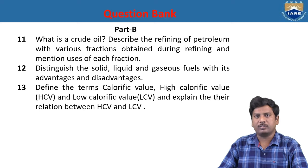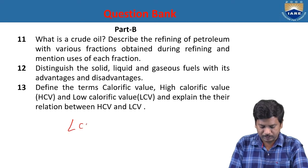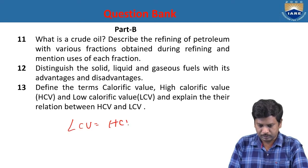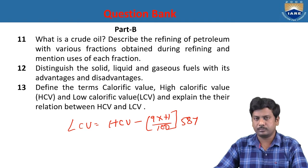Define calorific value, higher calorific value, and lower calorific value, and explain the relation between HCV and LCV. Calorific value is the amount of heat energy released per unit mass of fuel during combustion. Higher calorific value (HCV or GCV) is when combustion products are cooled down to room temperature. Lower calorific value (LCV or NCV) is when combustion products are allowed to escape. The relation is: LCV = HCV − 9 × (% hydrogen / 100) × latent heat.